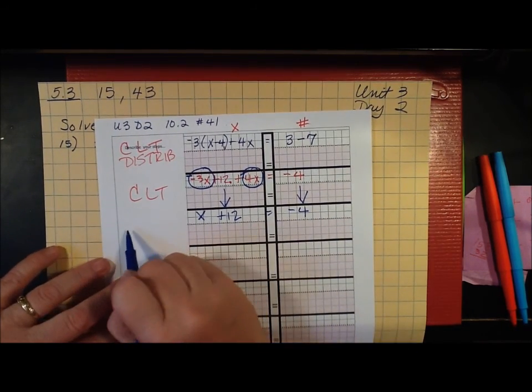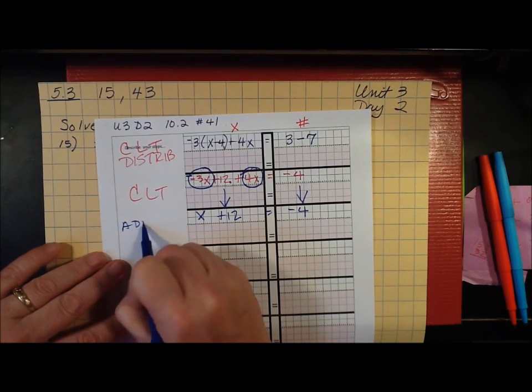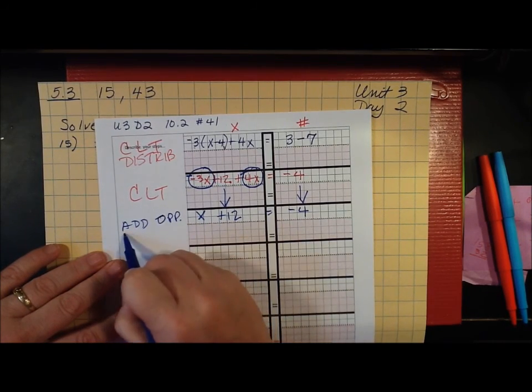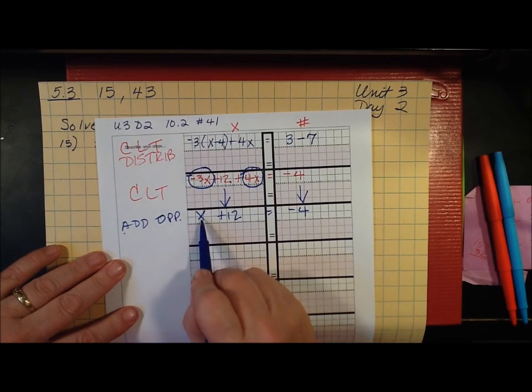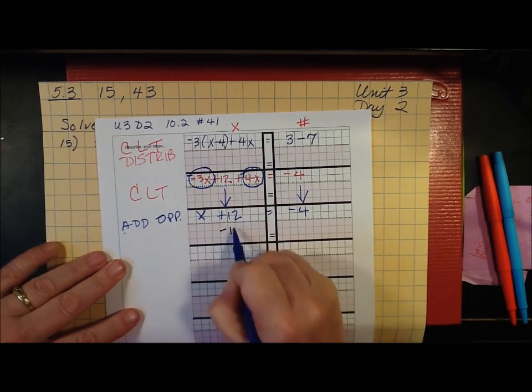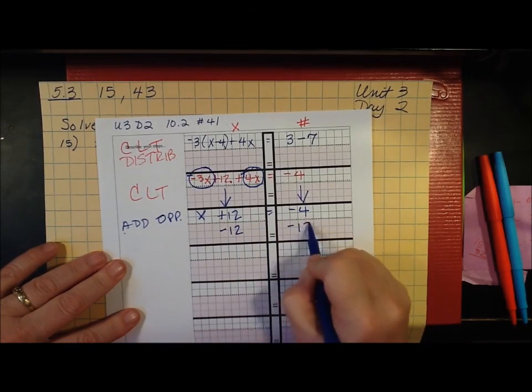And now I'm going to add the opposite. Add opposite. Because I want to get this by itself. I need to make this a 0. To make this a 0 I'm going to say negative 12, negative 12.